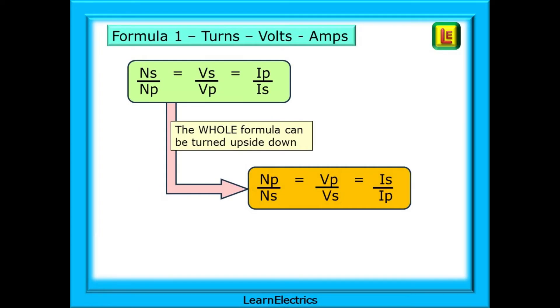We can do more with this formula. We might make a calculation where we need VP on the top or IS on the top for example. All we need to do is to turn the whole formula over all three blocks and everything will stay in balance.